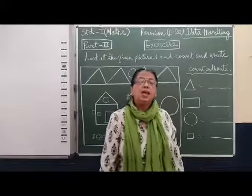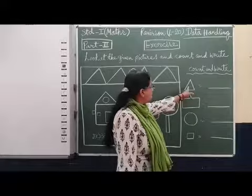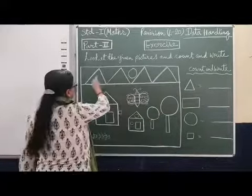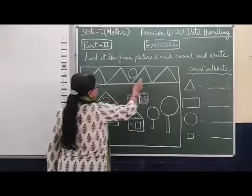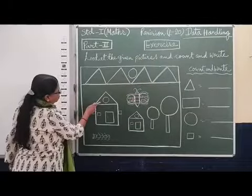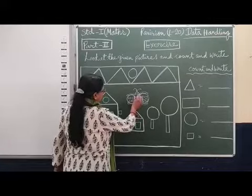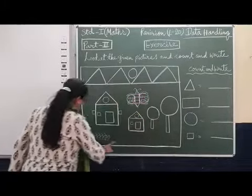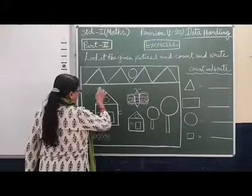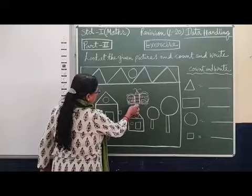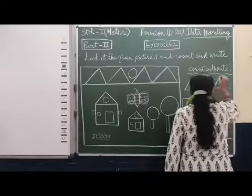First, let us count triangles, which have three sides. Starting from the mountains: one, two, three, four. In the first house: five. In the second house: six. Then butterfly: seven, eight. There are no more triangles, so let us verify — one, two, three, four, five, six, seven, eight. So there are 8 triangles in total.